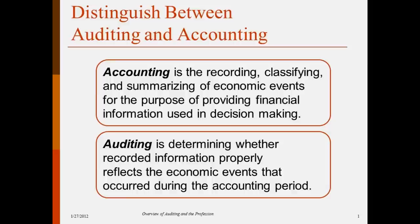Auditing is determining whether or not the information that has been recorded reflects the true economic events that have occurred. Auditing is saying: you've recorded this transaction, but is this how it actually happened? Is it recorded correctly? Accounting takes the economic information; auditing checks that information and ensures it's recorded correctly, and auditing is done by established criteria — generally accepted auditing standards — which we'll talk about today.